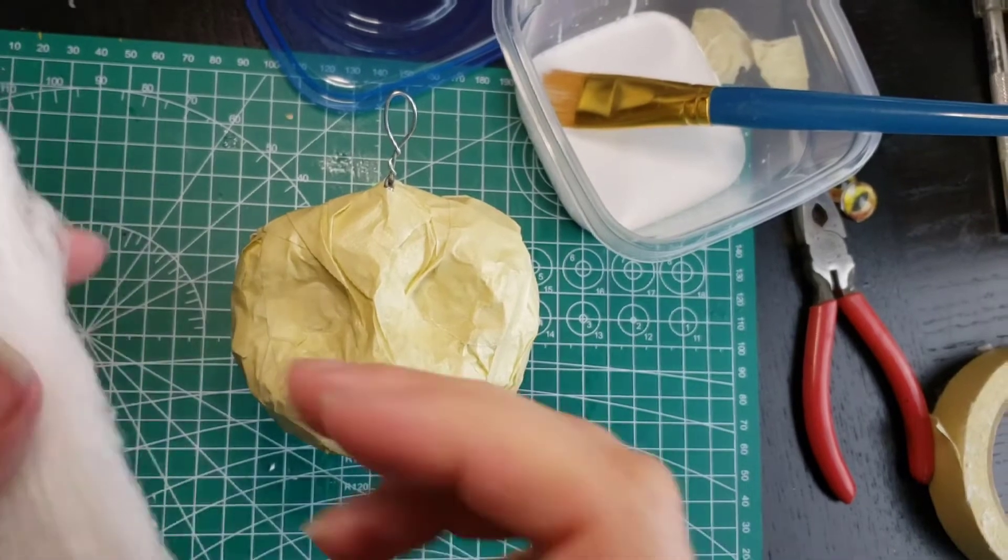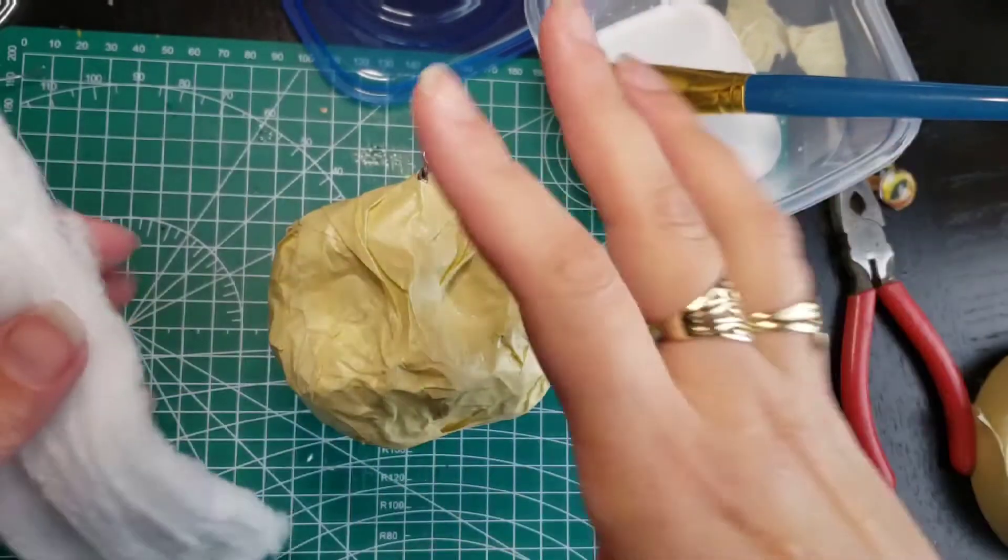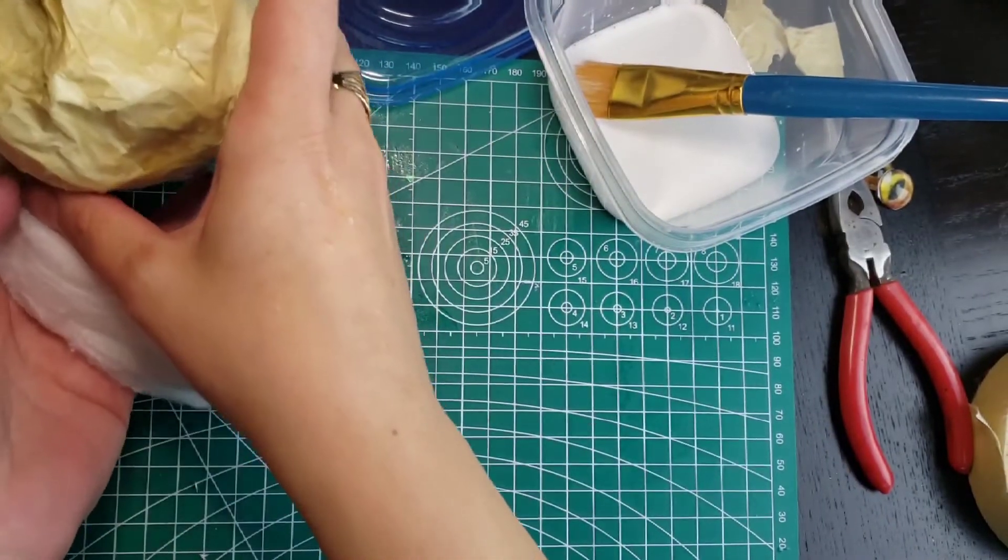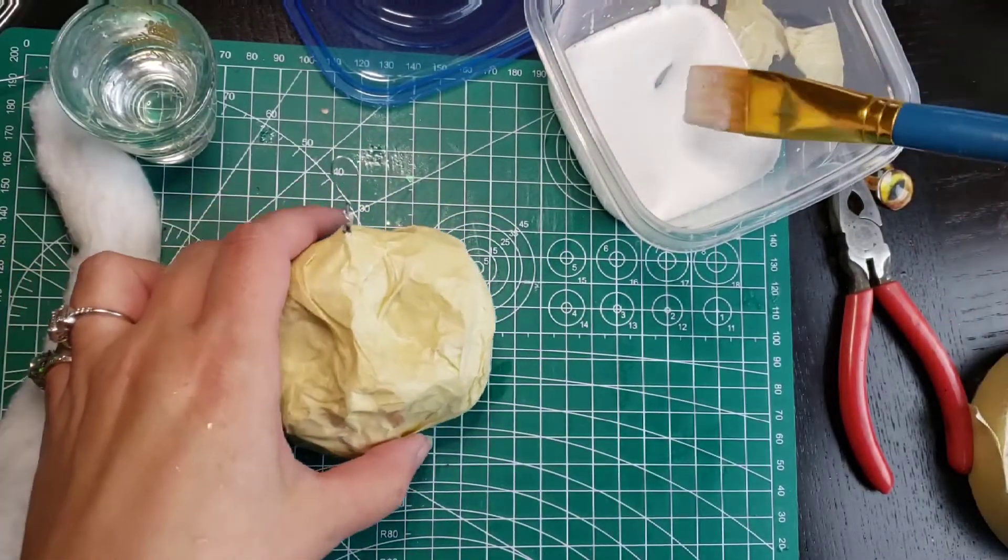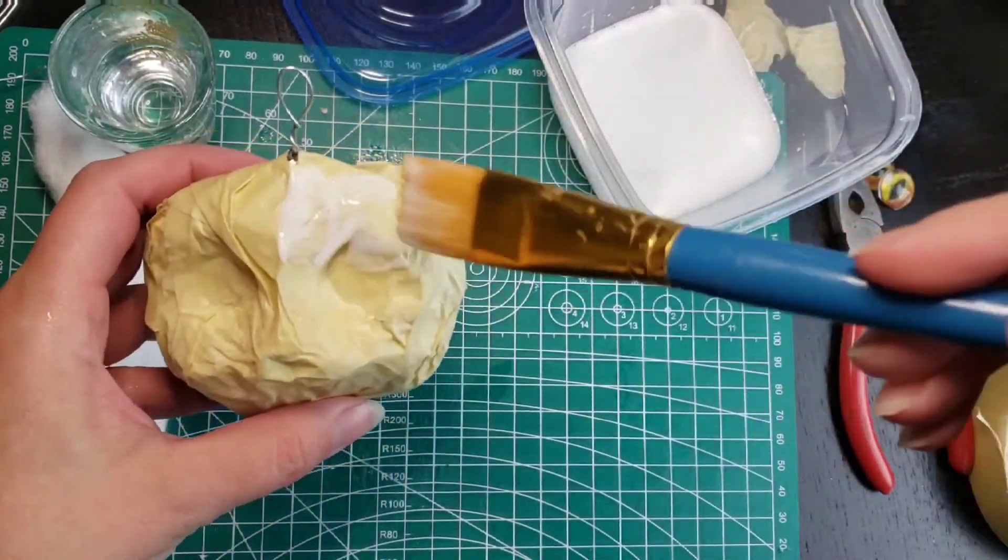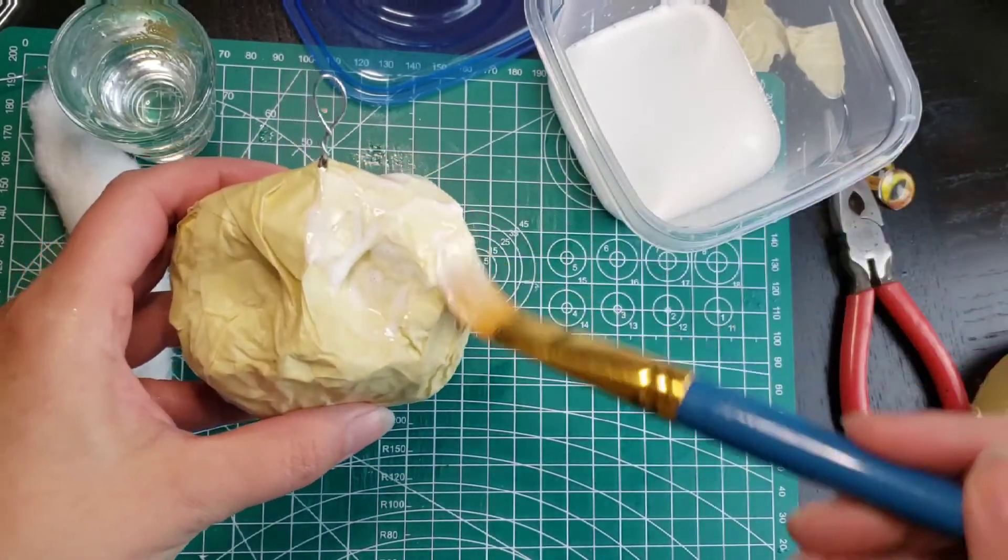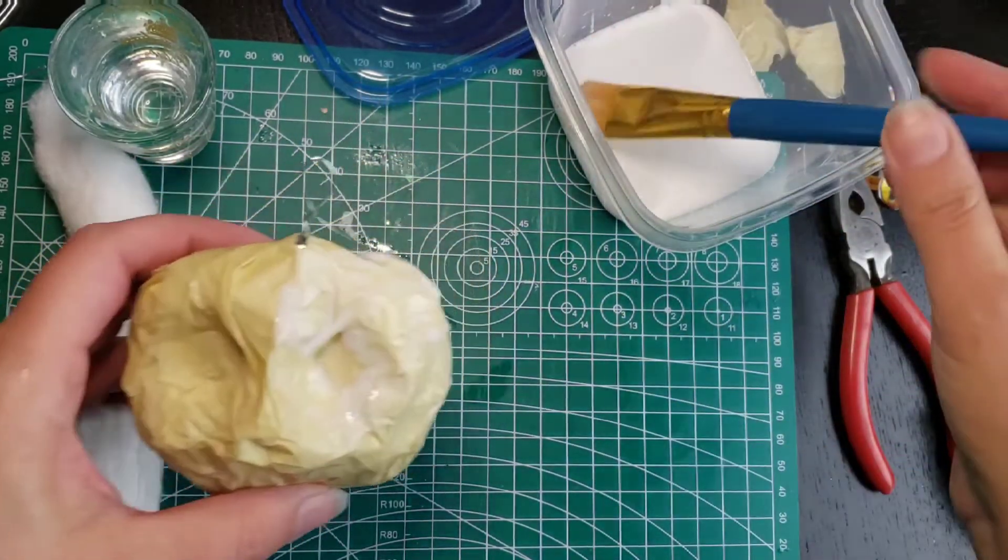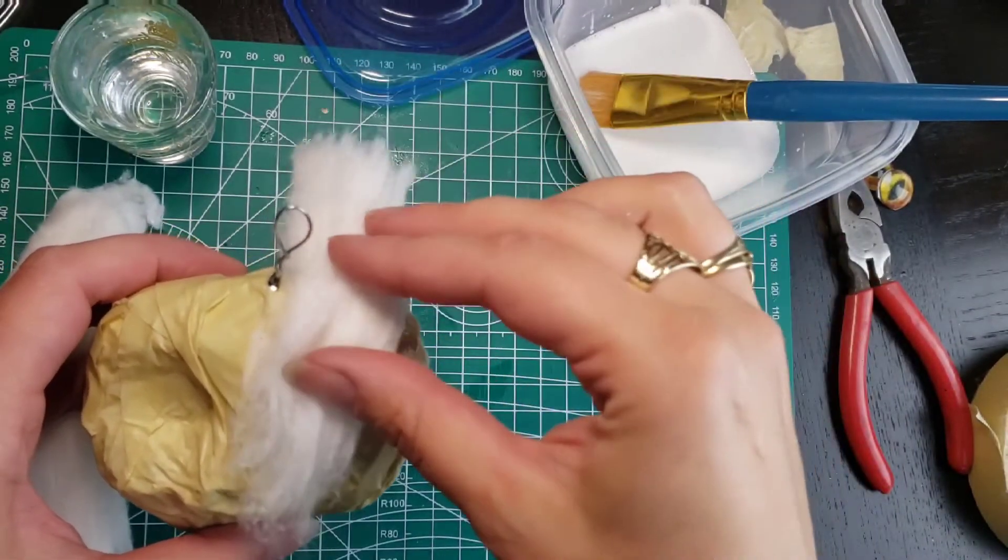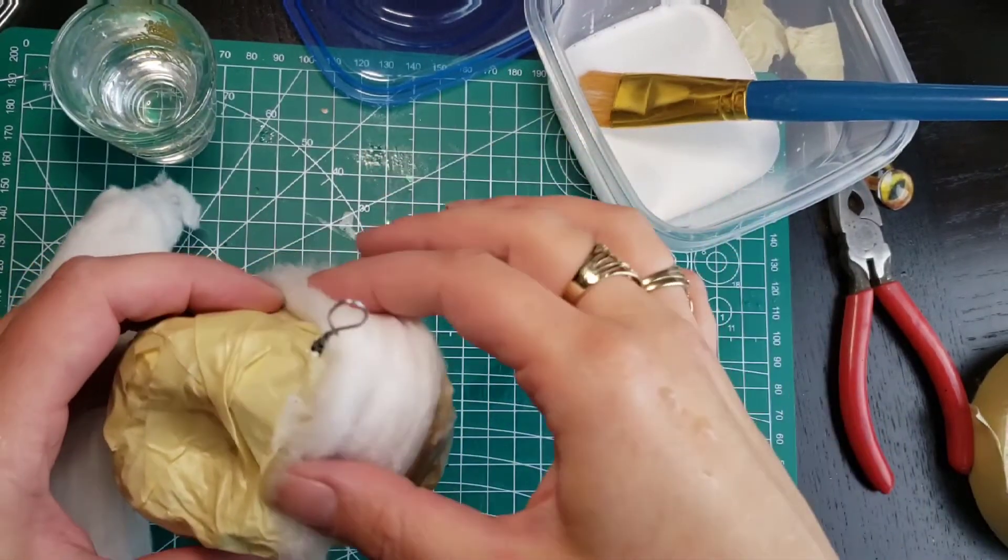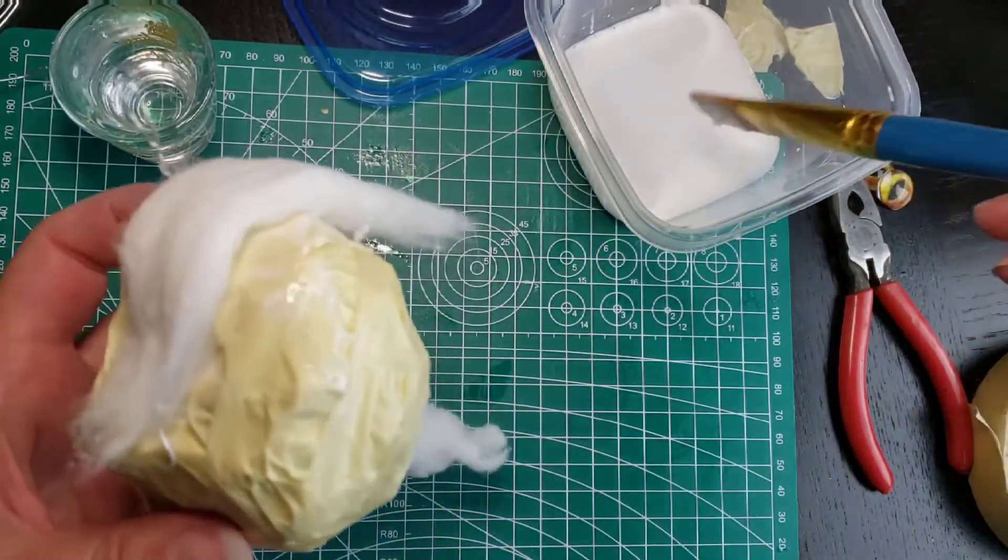Okay, now comes the fun part. We are going to cover our figure with the cotton. So what you're going to do is, I like to put a little layer of glue where I'm working, and then I just peel off some of the cotton and just keep sticking it on as I go.